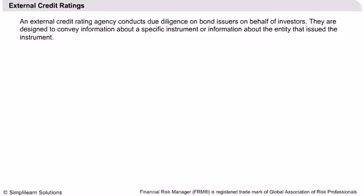External Credit Ratings are designed to convey information about a specific instrument or information about the entity that issued the instrument. When a company or the government wishes to issue a bond, it will usually approach one or more of the external credit rating agencies and provide access to its business.